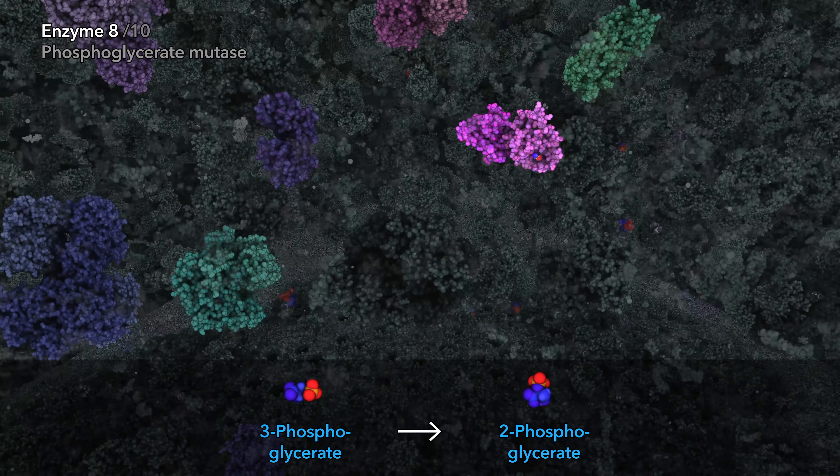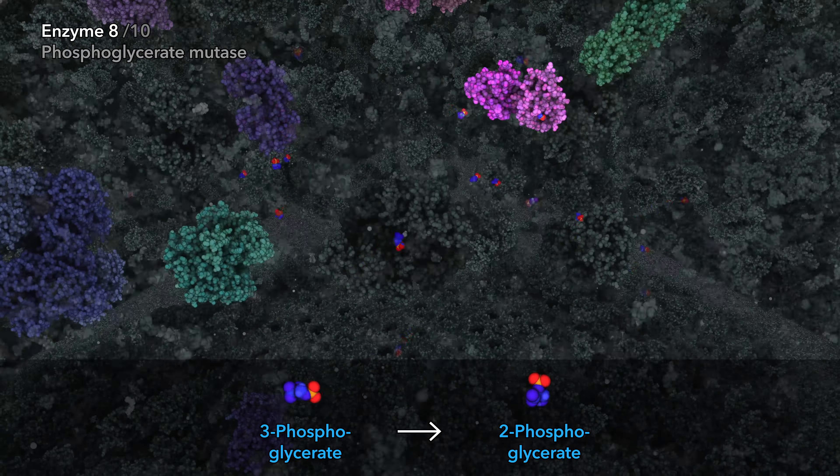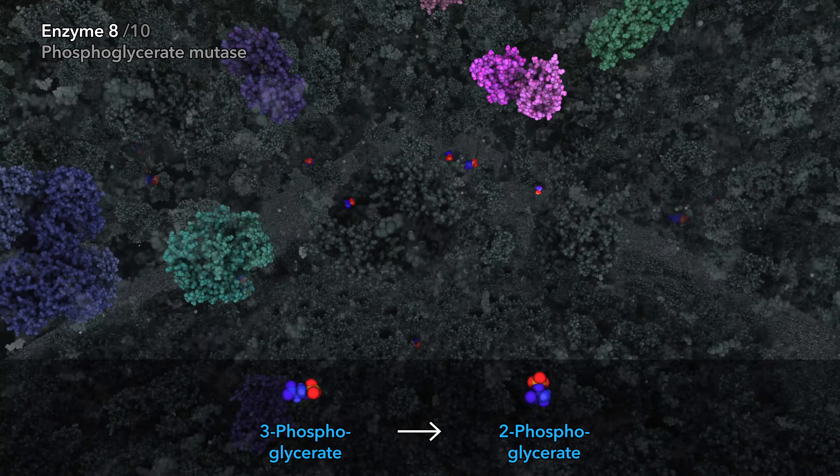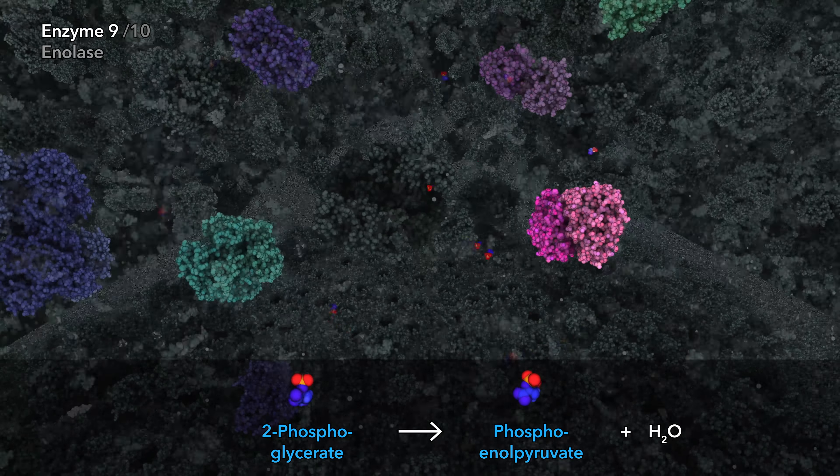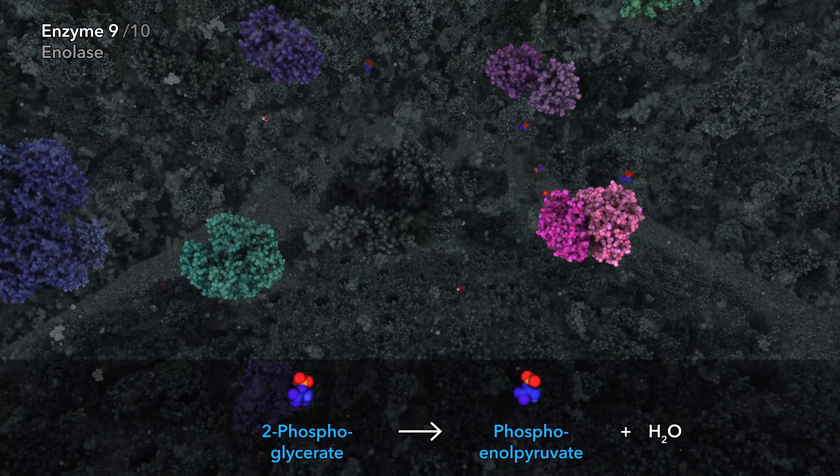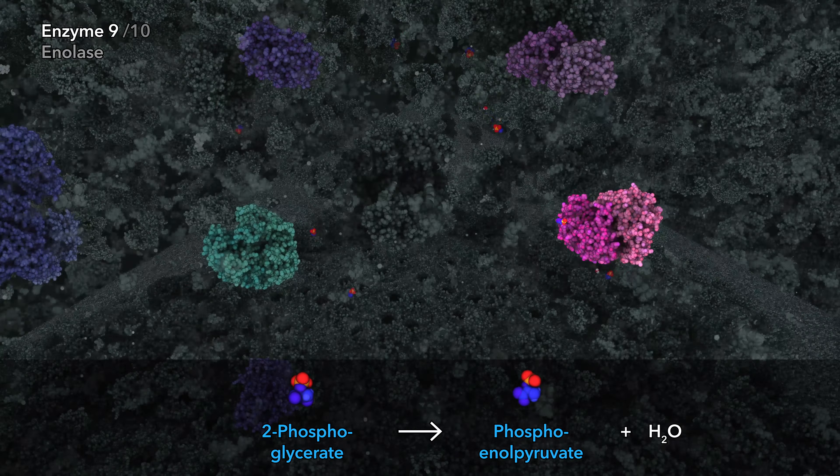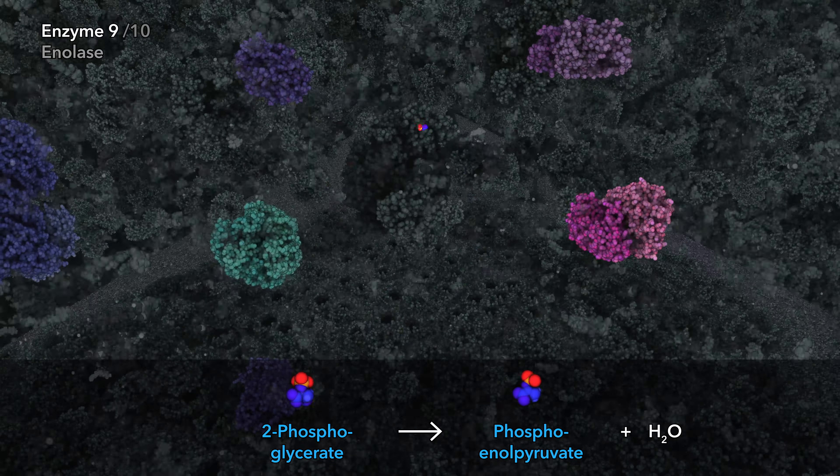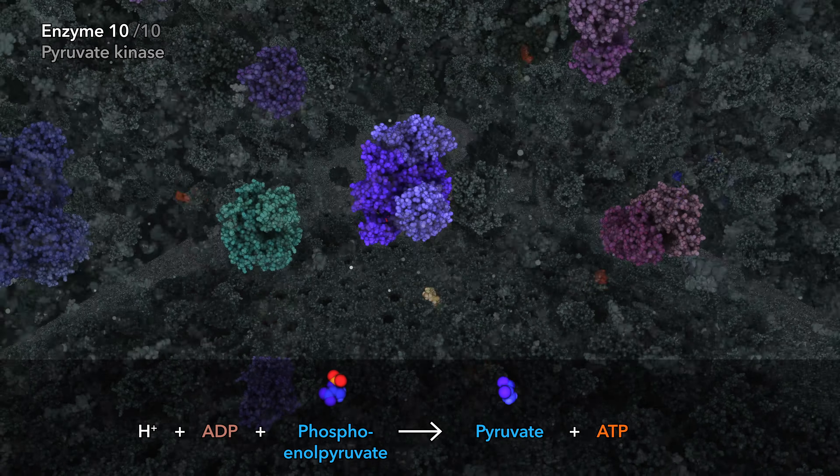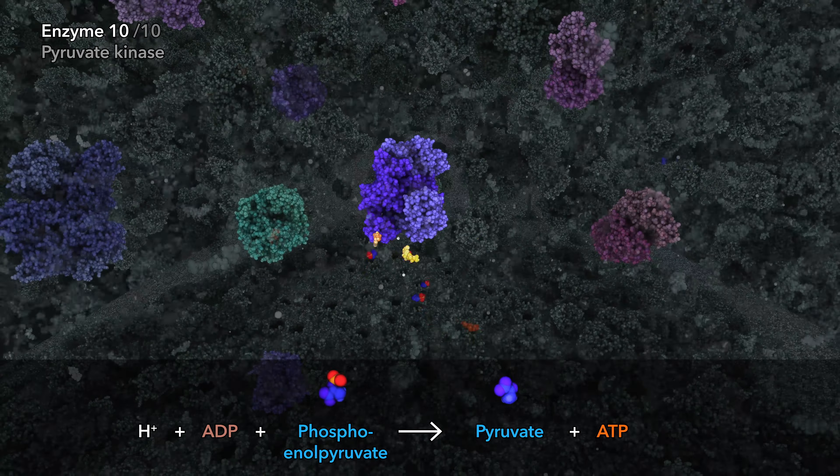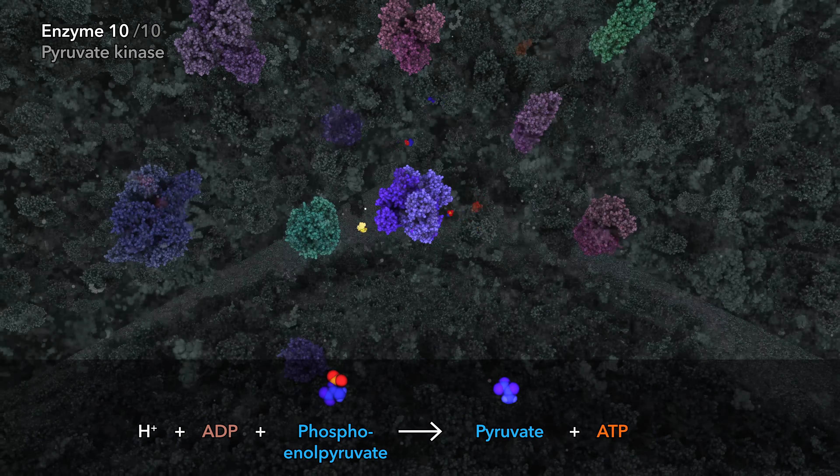The eighth enzyme rearranges the phosphate from the end of the molecule to the middle. The ninth enzyme catalyzes dehydration, increasing the potential energy in preparation for the final glycolysis reaction. The tenth enzyme transfers the remaining phosphate group to ADP, producing ATP and the 3-carbon sugar pyruvate.